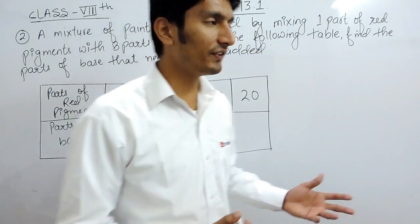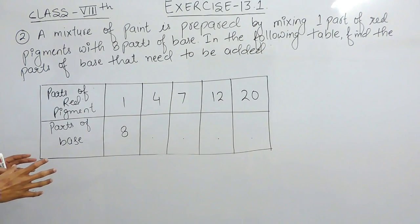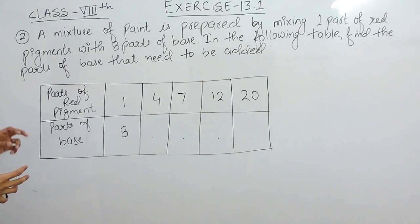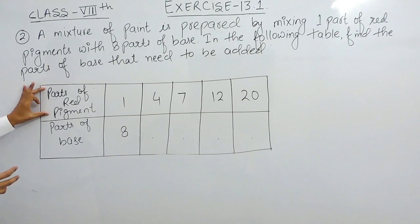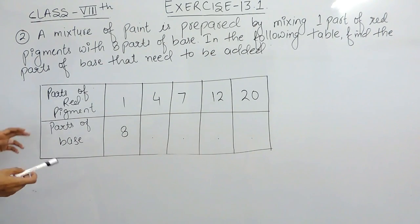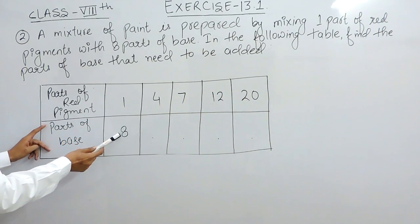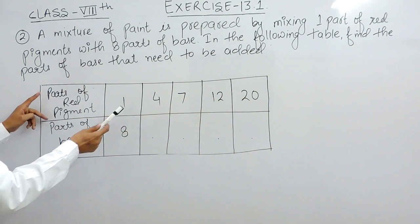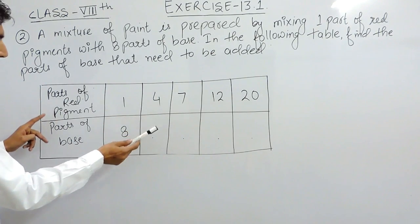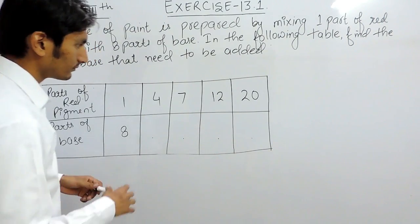Hello everyone. In this video we are going to solve the second question of Exercise 13.1. In this you have to make a paint by mixing two kinds of things. First of all you have to mix a red pigment with base. You have to find out: if I am adding one part of red pigment I have to add eight parts of base. If I want to add four parts of red pigment, how many parts of base do I need to add, and so on.